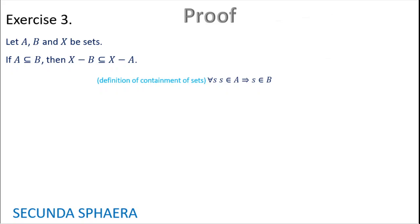Moreover, it is going to be helpful for the proof to use the contraposition law. In this case we have: for all s, s in A implies s in B. This is equivalent — if and only if — to: for all s, s is not in B implies s is not in A. This is just the contraposition law.